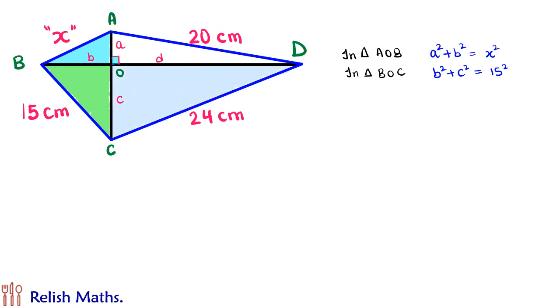Same way in right angle triangle COD, we will get c² + d² = 24² and in the fourth triangle AOD, we will get a² + d² = 20².